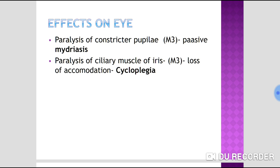Paralysis of the ciliary muscle by acting on M3 receptors causes loss of accommodation and cycloplegia — meaning loss of distinct vision and near vision. The patient becomes almost blind, unable to see near or far objects clearly.